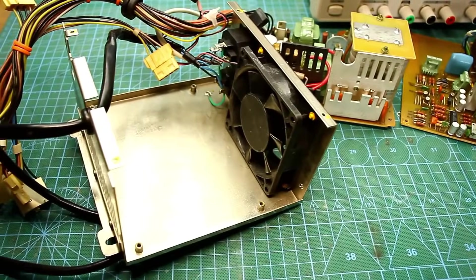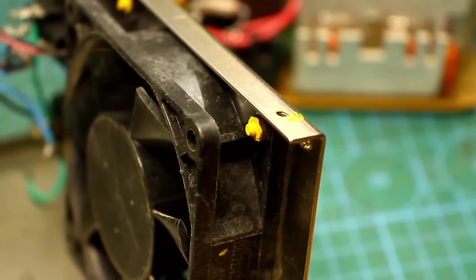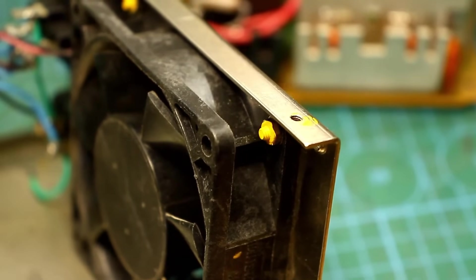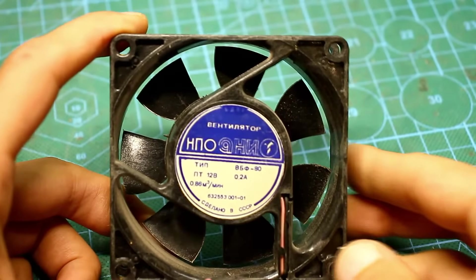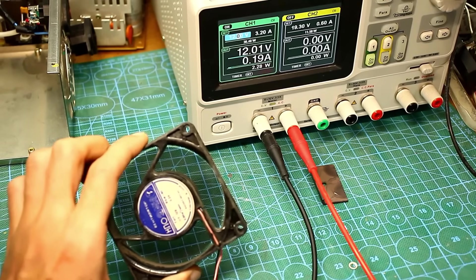The cooling fan is standard, attached to the case with screws and nuts. By the way, it's not on bushings like cheap mass-produced items, but on ball bearings. Blows, let me tell you, like nobody's business. However, it's quite noisy. From 12 volts, the consumption is 0.2 amperes.